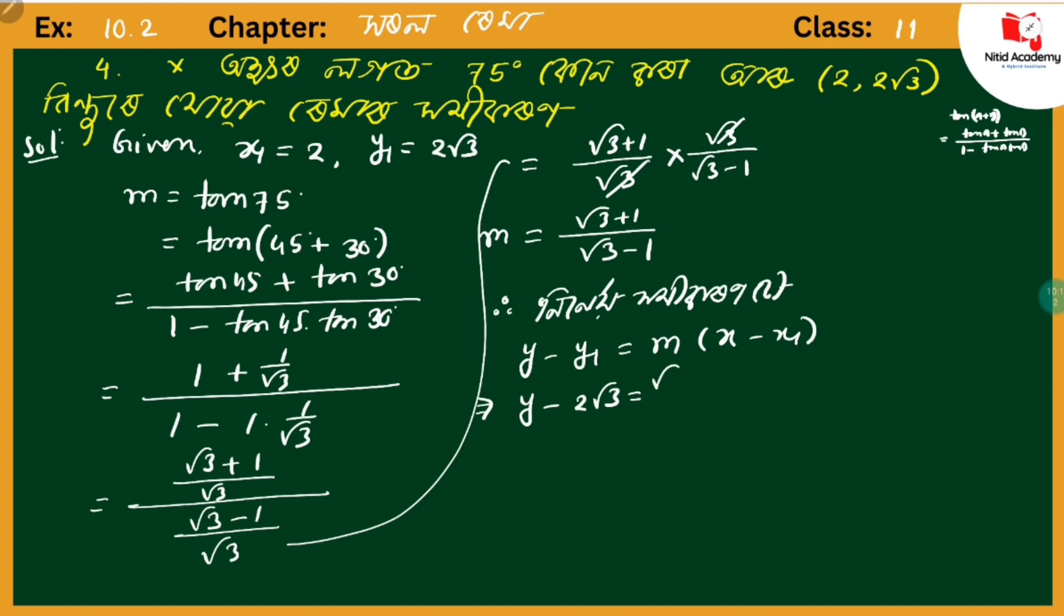y - y₁ equals m, which is (√3 + 1)/(√3 - 1), times (x - x₁). x₁ is 2, so (x - 2).